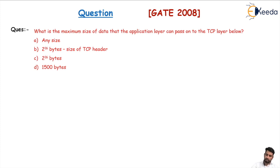The question asks: what is the maximum size of data that the application layer can pass to the TCP layer below? We know at the application layer, our PDU is a message and this PDU size may be of any size.